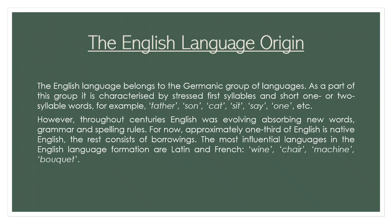However, throughout centuries, English was evolving, absorbing new words, grammar, and spelling rules. For now, approximately one-third of English is native English. The rest consists of borrowings. The most influential languages in the English language formation are Latin and French. For example: wine, chair, machine, bouquet.